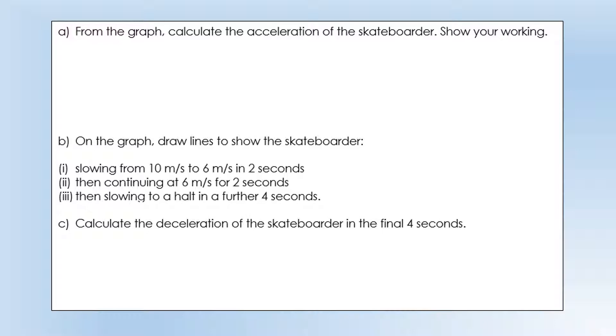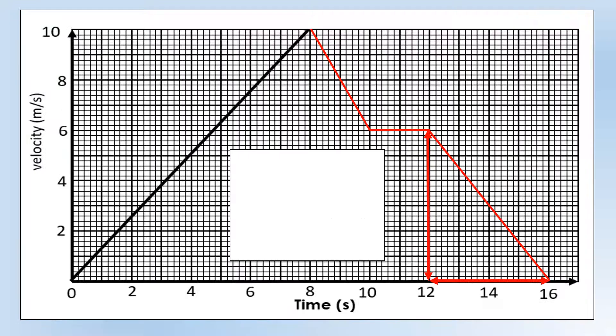Calculate the deceleration of the skateboarder in the final 4 seconds. Deceleration is minus 1 times the gradient, or just minus the gradient, because deceleration is acceleration times minus 1. So that deceleration is change in velocity, final minus initial, so 0 minus 6, time past 4 minus 0, and we get 1.5 meters per second squared.